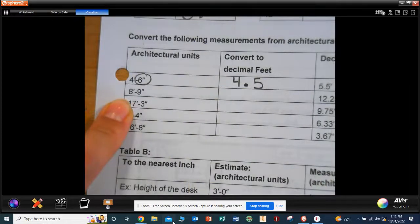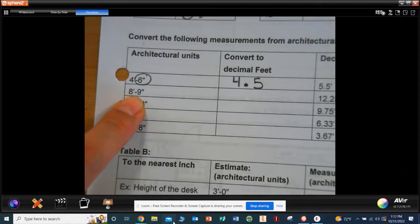All right, 8 feet 9 inches. 8 feet 9 inches. What would it be? 8.75. Where does she convert 9 to 0.75? From the chart above. If you look at 9 inches, you should have 0.75.